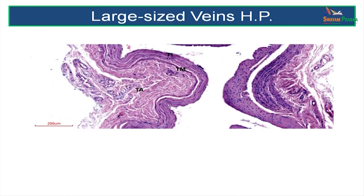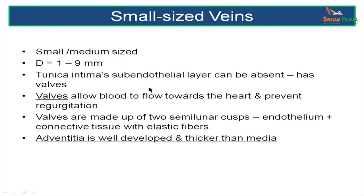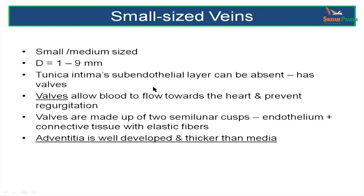In a high-power view of a large-sized vein, we see the thin tunica intima, a tunica media, and a large thick tunica adventitia. Small-sized veins are about 1 to 9 mm in diameter; their sub-endothelial layer could be absent. This vein also has valves allowing unidirectional flow of blood, and the adventitia is well developed and much thicker than the media.